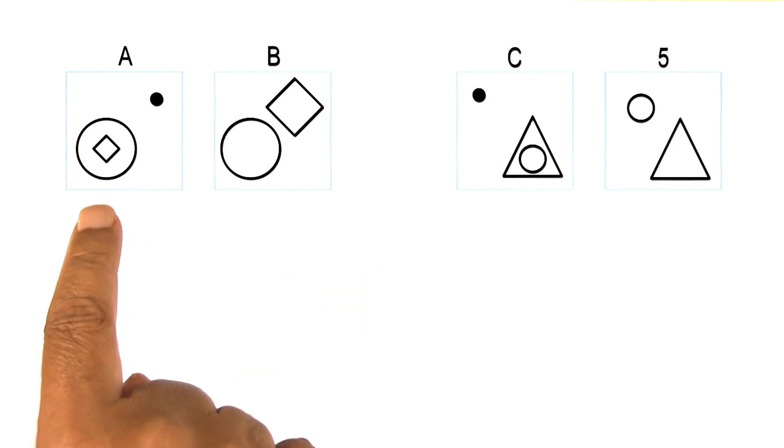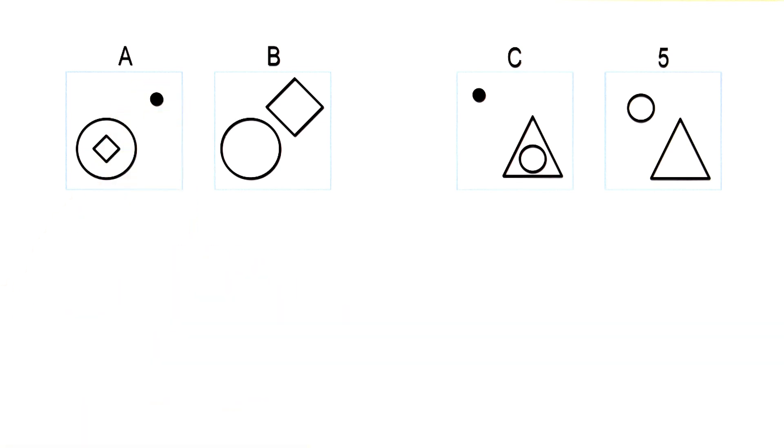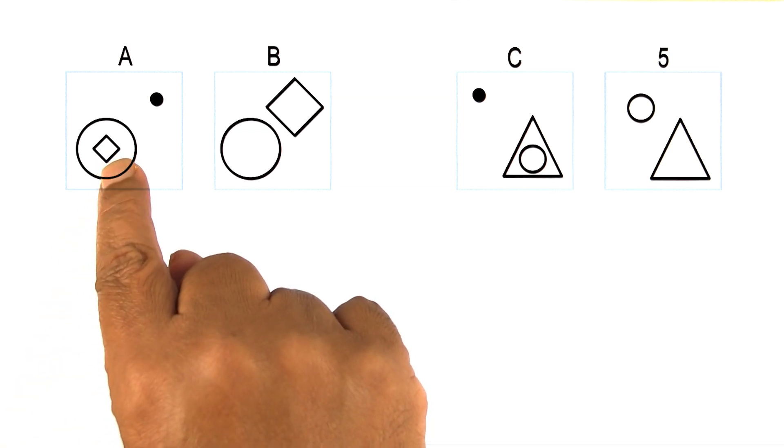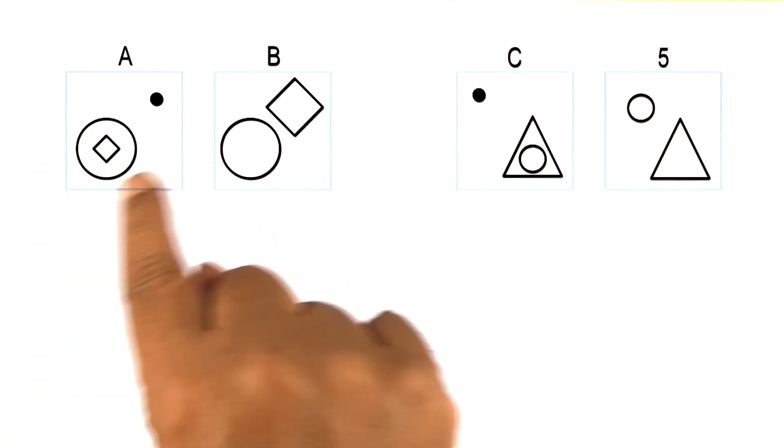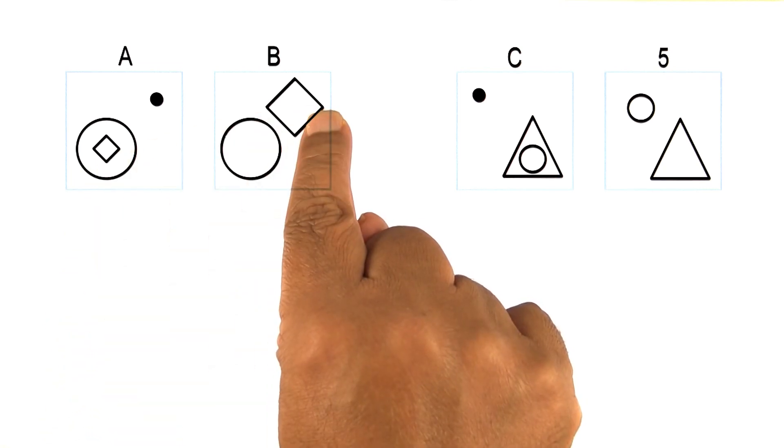So as an example, it would compare A and B by saying that it is a set transformation, this particular dot is no longer there. And there is affine transformation, in fact two affine transformations. First, that make this square bigger. And second, that translates the position of the square from inside the circle to outside the circle.